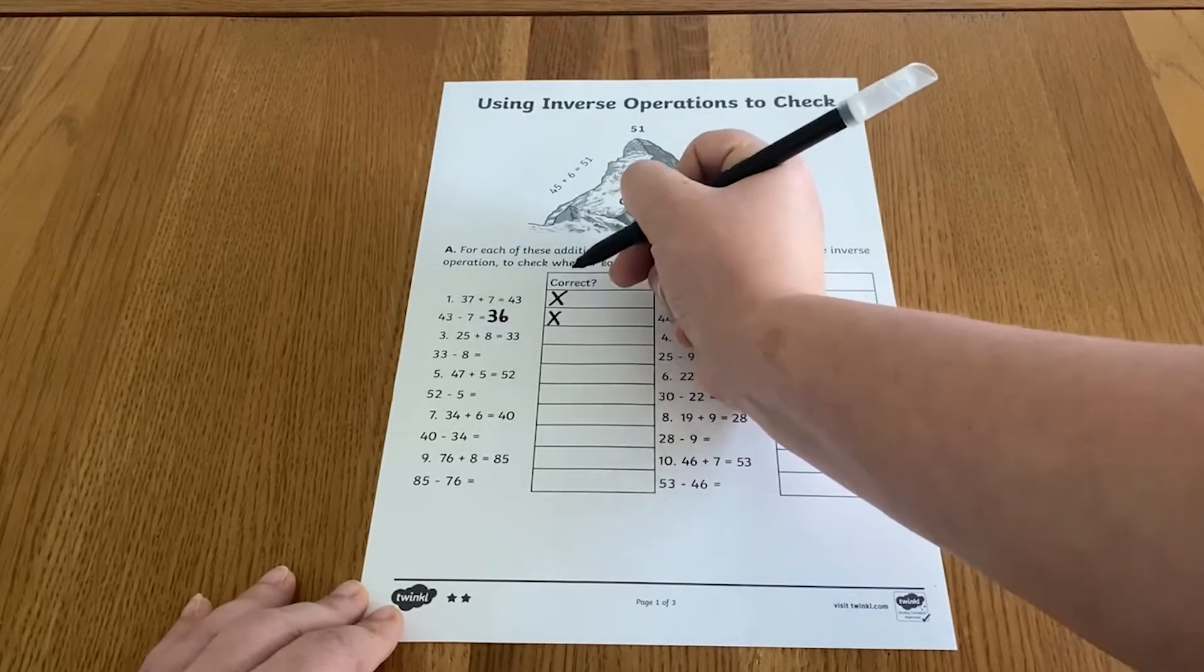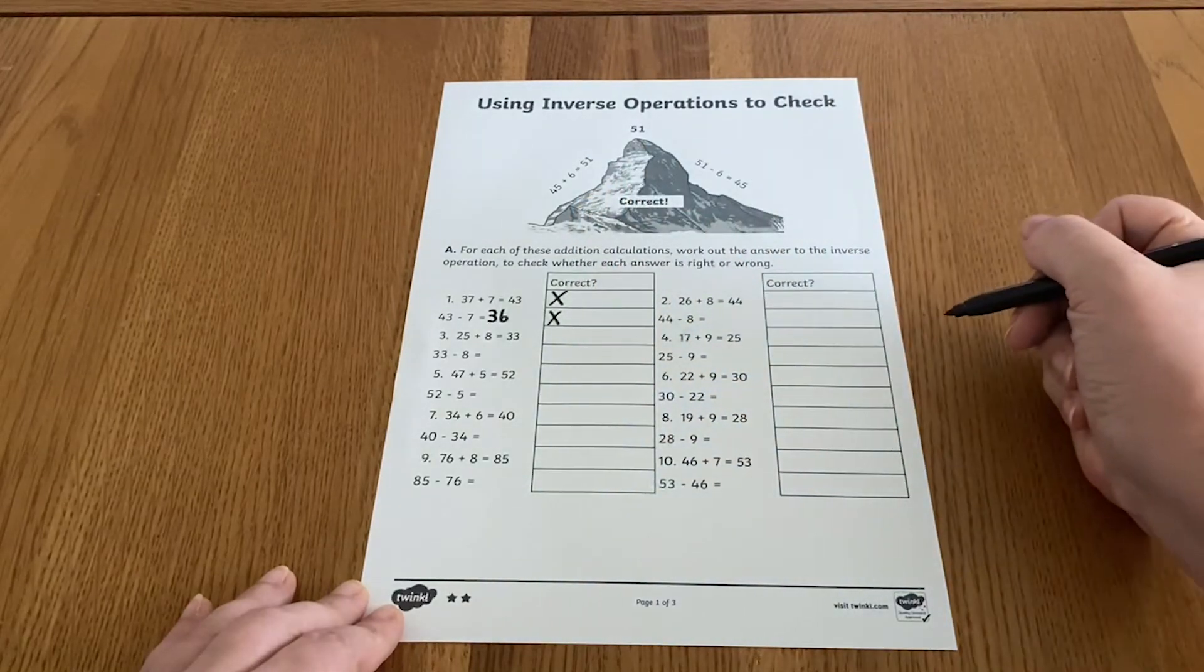See if learners can spot that the three numbers in both calculations should be the same. When learners have completed the worksheet, why not explore with them that there's more than one inverse calculation that could be used to check the answers to addition and subtraction calculations.